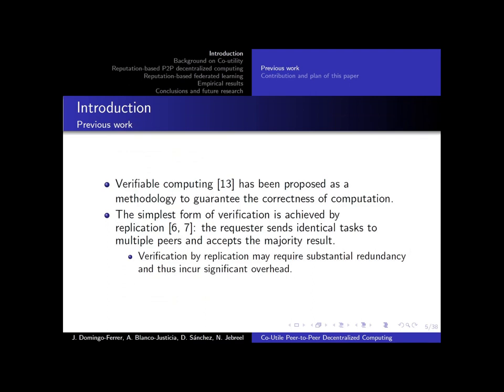In order to guarantee the correctness of these computations by peers, some works propose verifiable computing. The simplest form of verification is achieved by replicating the task, so the requester sends identical tasks to multiple peers and only accepts the result which is reported by the majority. This, however, may lead to serious overhead problems.